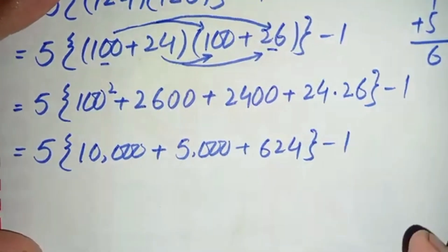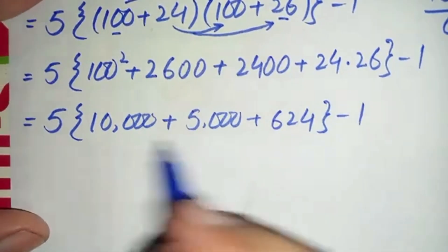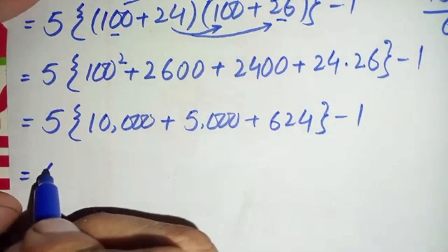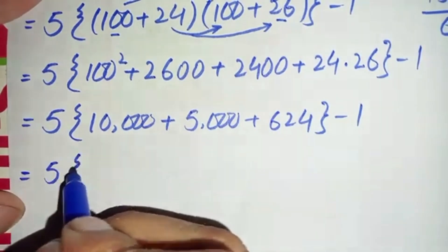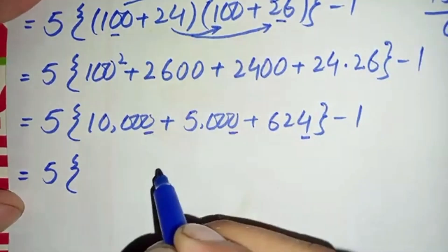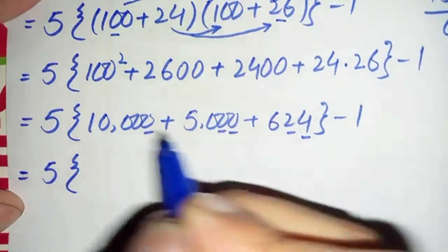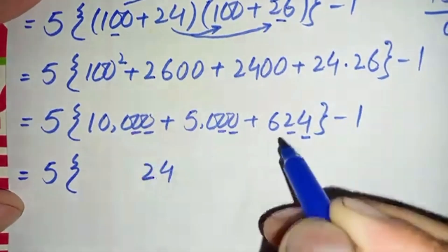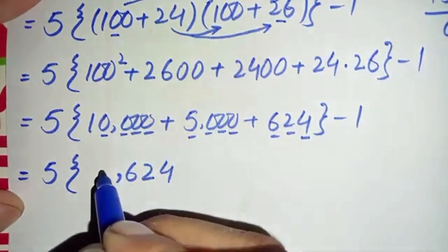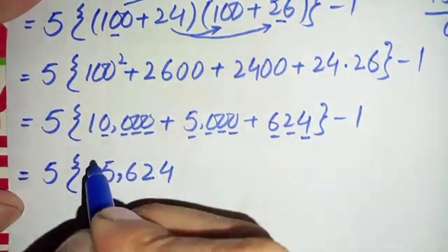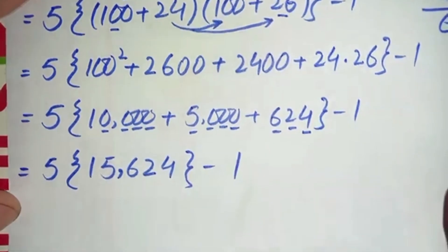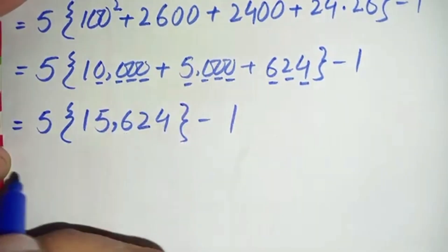So the value of this product is 624, minus 1. We need to add these three numbers first and then multiply by 5. Adding from the ones position: 4 plus 0 plus 0 is 4; 2 plus 0 plus 0 is 2; 6 plus 0 plus 0 is 6; 5 plus 0 is 5; and 1. So the sum of these three numbers gives 15,624. Here we will multiply this number by 5.